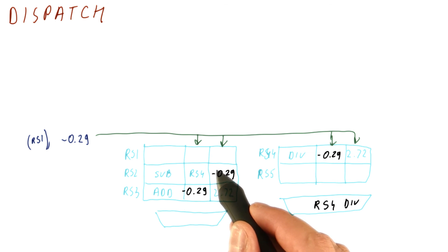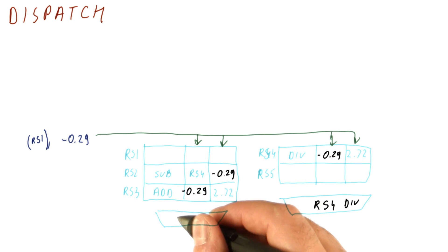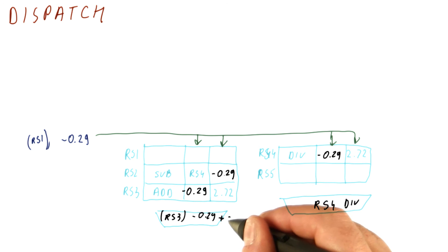And then here, this one is not ready to go, so the only one that can really go here is this one. So what we will be doing for a while is RS3 minus 0.29 plus 2.72. Once these are done, they're going to broadcast their results and this cycle will repeat.